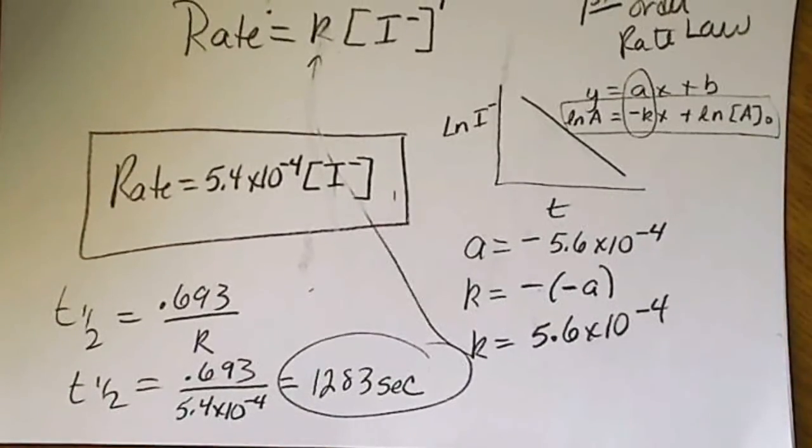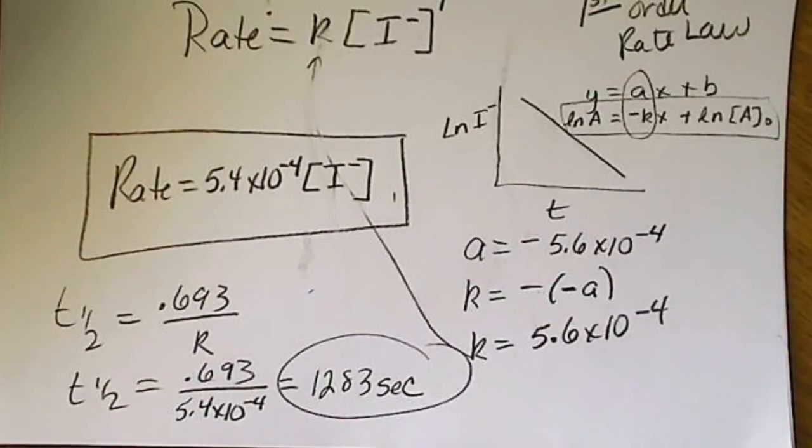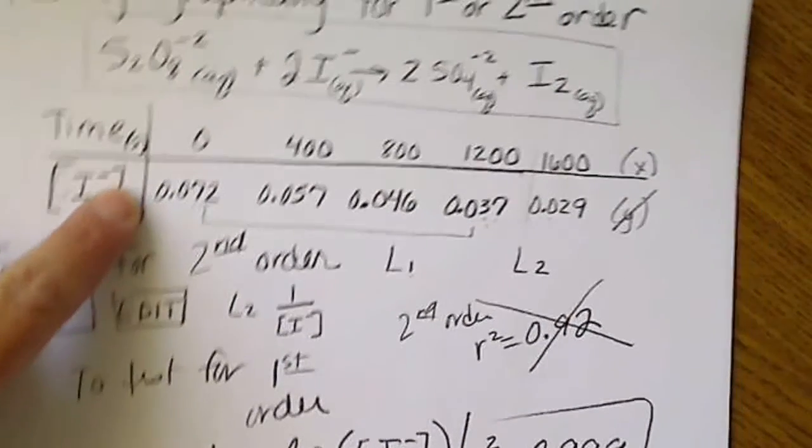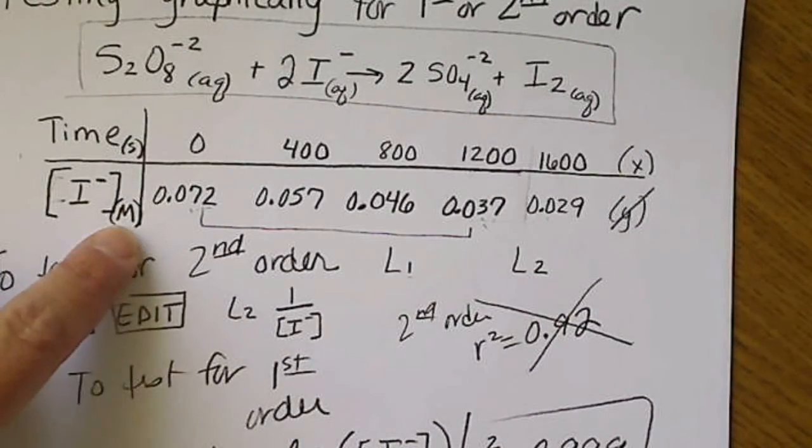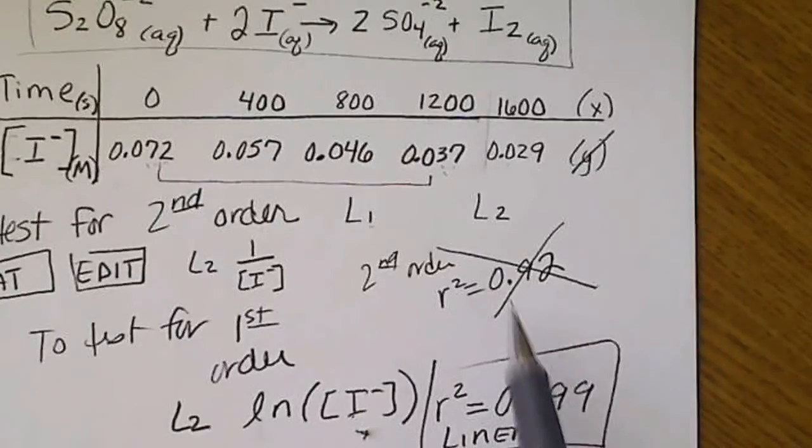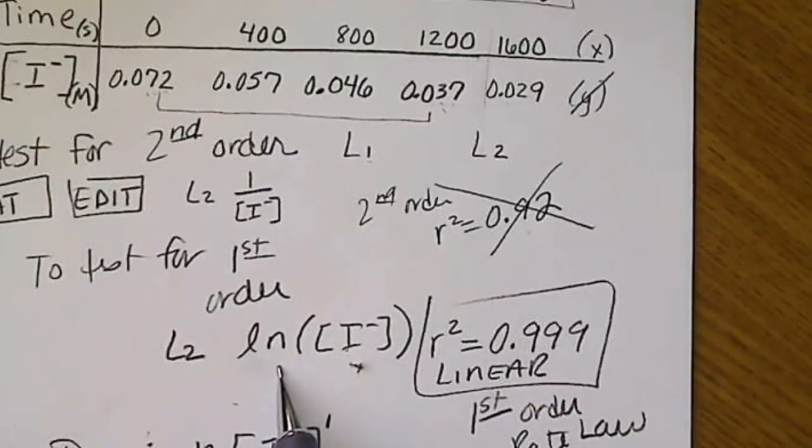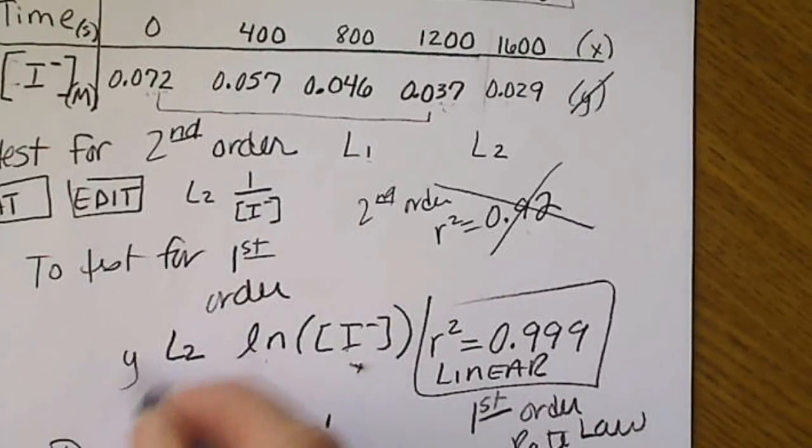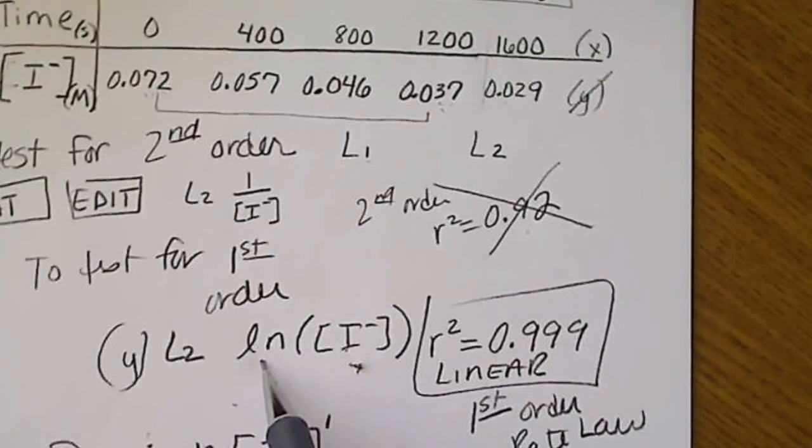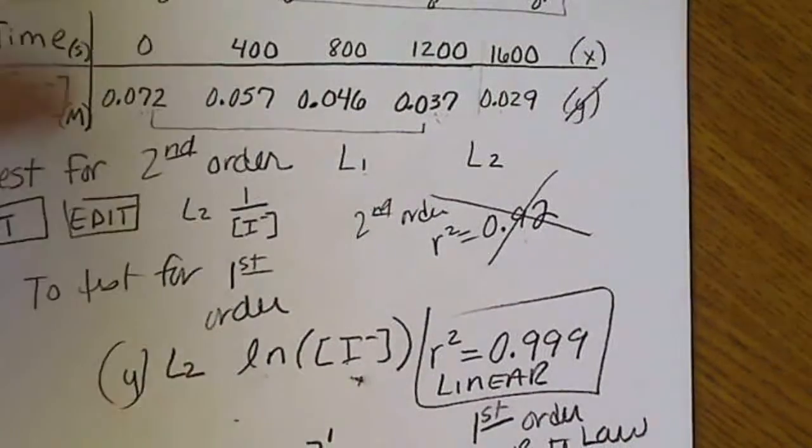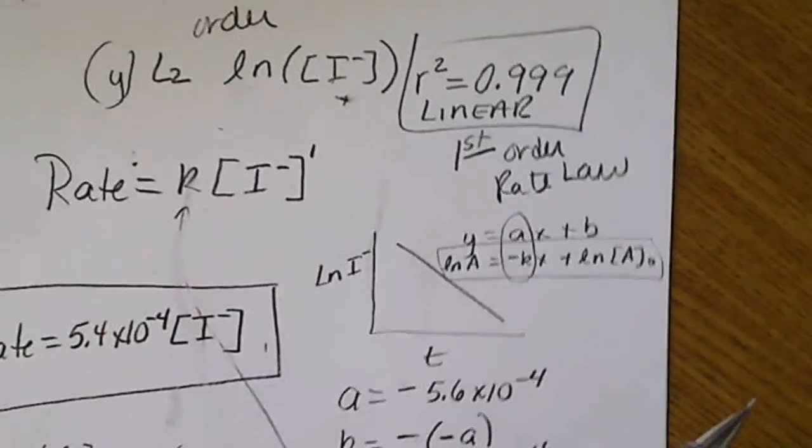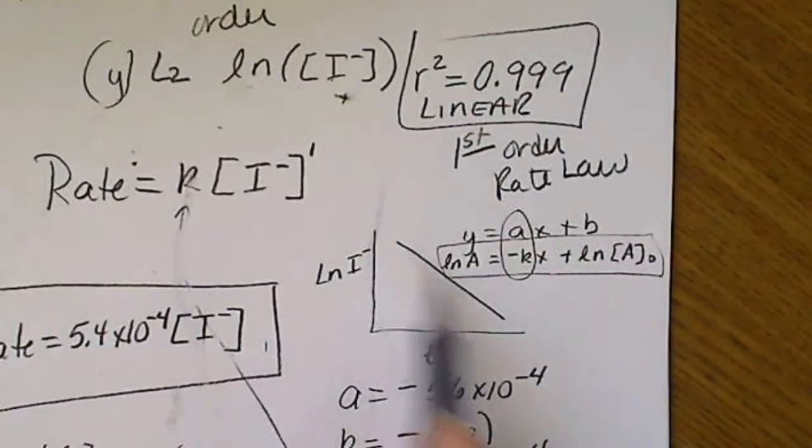So again, that would be data that after we've plugged it in graphically, we tested for second order. We got a bad r-squared value, so then we tested for first order. And remember the y values or L2 has to be the natural log of these concentrations.